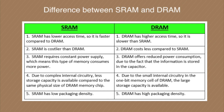Now we will distinguish between the two with some more points. SRAM has lower access time, so it is faster compared to DRAM. DRAM has higher access time, so it is slower than SRAM. SRAM is costlier than DRAM, but DRAM costs less. SRAM requires constant power supply and consumes more power, whereas DRAM offers reduced power consumption due to the fact that information is stored in the capacitor.